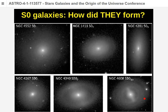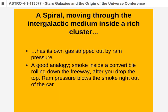What about S0 galaxies — where do they come from? Imagine a spiral moving through the intergalactic medium inside a rich galaxy cluster, which might have hundreds or even a thousand galaxies. There's gas in the disk of the spiral, but there's also gas inside the cluster — roughly half the ordinary matter in a cluster is just gas that the galaxies are moving through, and it can be denser closer to the cluster center.